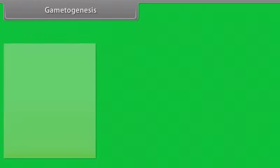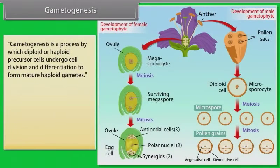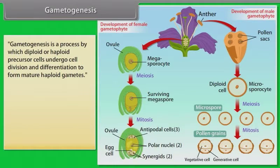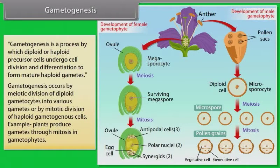Gametogenesis is a process by which diploid or haploid precursor cells undergo cell division and differentiation to form mature haploid gametes. Gametogenesis occurs by meiotic division of diploid gametocytes into various gametes, or by mitotic division of haploid gametogenic cells.